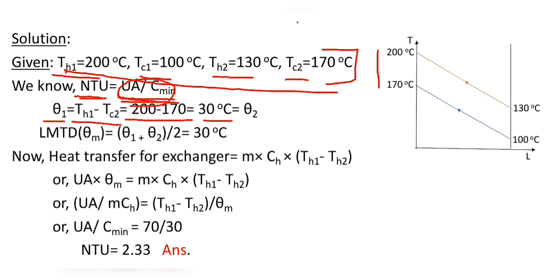ΔT2 is the temperature difference at the outlet, equal to TH2 minus TC1. That is 130 minus 100, which also equals 30 degree Celsius.